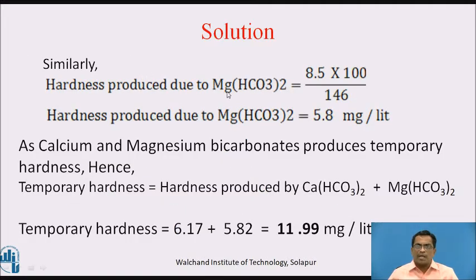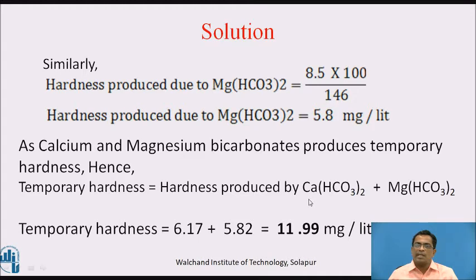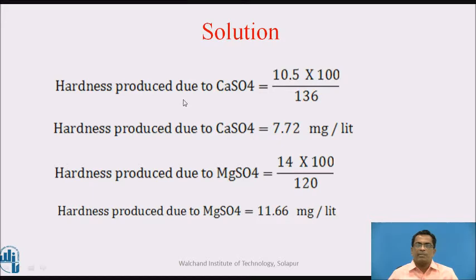As calcium and magnesium bicarbonates produce temporary hardness, the temporary hardness is the sum of their individual hardness values: 6.17 + 5.8 = 11.99 mg/L. Now for permanent hardness — hardness produced due to calcium sulphate: 10.5 × 100 ÷ 136 = 7.72 mg/L.